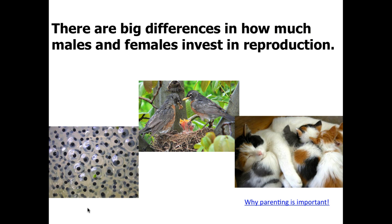There's a big difference in how much males and females invest in reproduction. For many reptiles and amphibians, there's practically no parental investment by either males or females. In many bird species, there's a fairly equal investment by both males and females. And in many mammals, females have a disproportionate investment in both reproduction and child rearing.